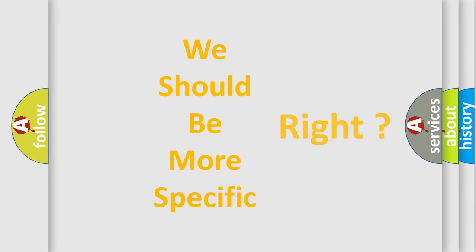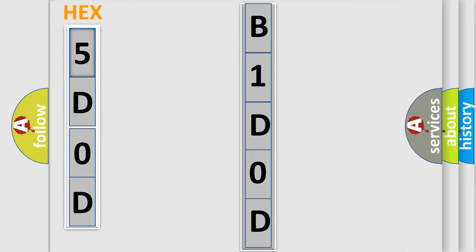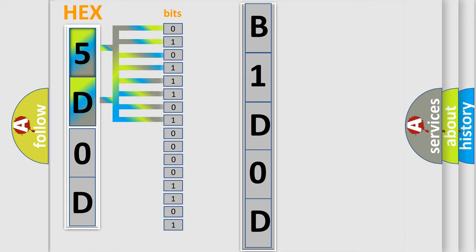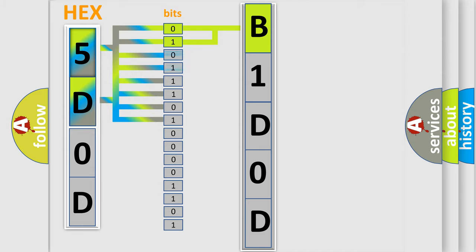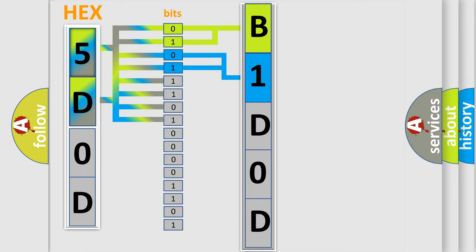The following demonstration will help you look into the world of software for car control units. The error code is split into two bytes consisting of 16 bits. One bit is the basic unit that each computer works with. The bit has two logical states: zero, low level; one, high level. By combining the first two bits, the basic character of the error code is expressed. The next two bits determine the second character. The last bits of the first byte define the third character of the code.